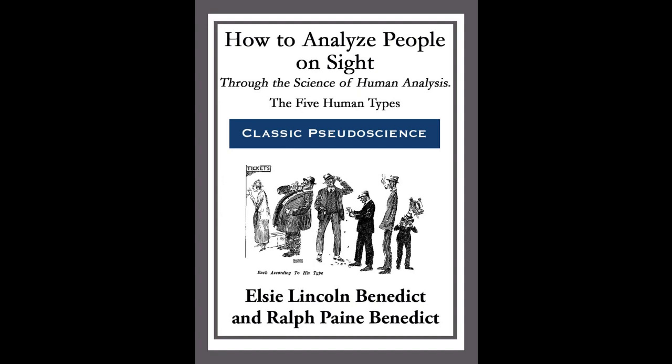Famous male singers Caruso, John McCormack, and all other famous male singers had large thoracic systems, but in every instance it was combined with a large muscular development. The Solid Sitter: when a muscular sits down, he does it as he does everything — with definiteness and force. He does not spill over as does the alimentive, nor drape himself gracefully like the thoracic, but planks himself as though he meant business.